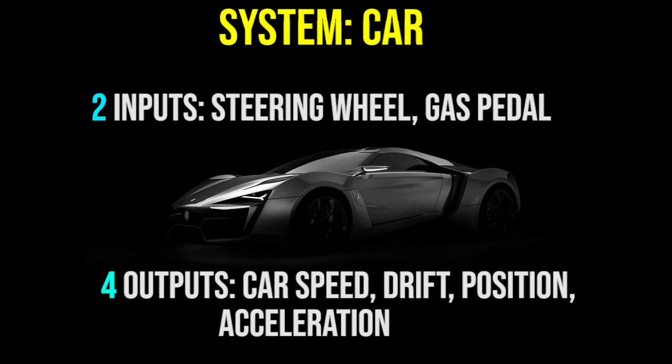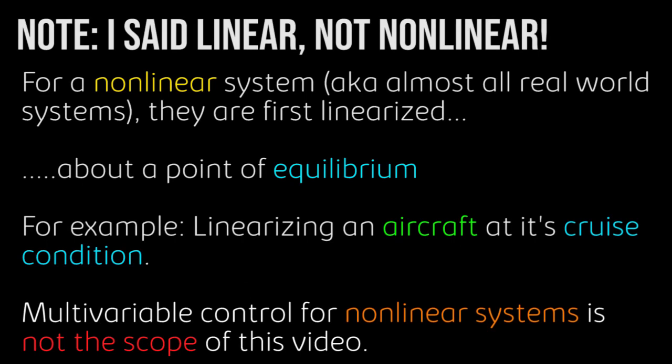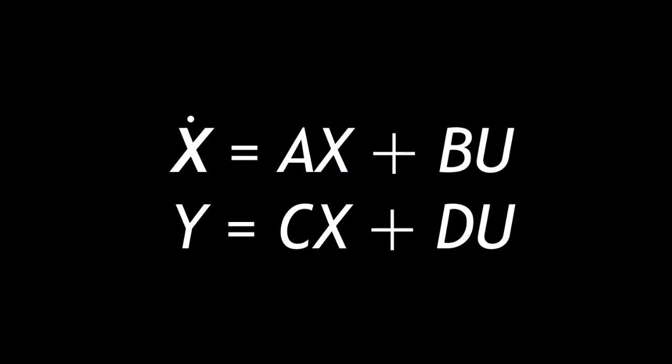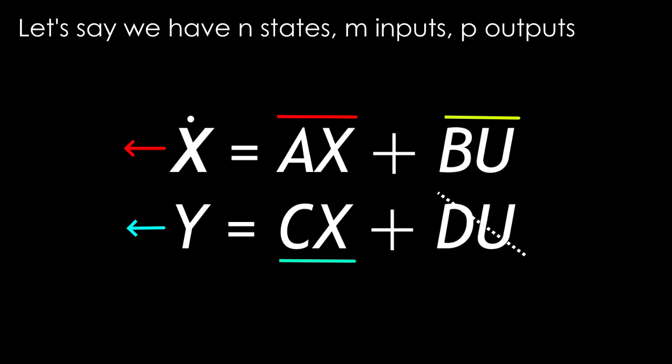You can represent a linear multivariable control system in a state space format. State space is given by x dot equals Ax plus Bu and y equals Cx plus Du. Here, A is the system matrix, B is your input matrix, C is what's measured, and D is the feedforward term. For simplicity, we can drop the D because we don't need feedforward.